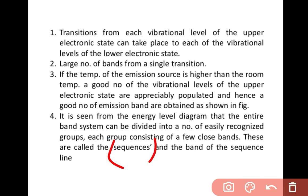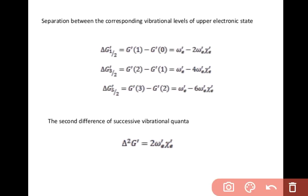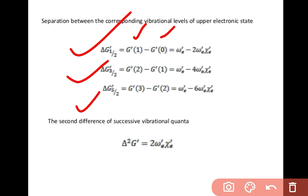The separation between the corresponding vibrational levels of the upper electronic state can be written as: ΔG(v' + ½) = G'(1) − G'(0), and similarly for ΔG'(3/2) and ΔG'(5/2). The second difference of successive vibrational factors can be written as: Δ²G' = ω_e' x_e'.